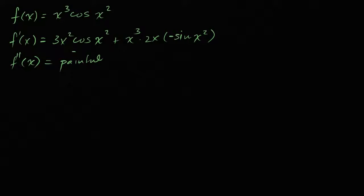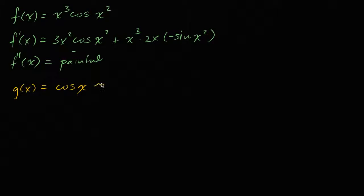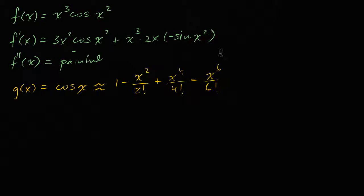I'll give you a hint. We know what the Maclaurin series for cosine of x is — we've done that in a previous video. Look up 'cosine Taylor series at zero' on Khan Academy and you'll find it. This is one of the most famous Maclaurin series. Let's say g of x equals cosine of x. The Maclaurin series approximation of that is: one minus x squared over two factorial, plus x to the fourth over four factorial, minus x to the sixth over six factorial, plus x to the eighth over eight factorial, and it just keeps going minus, plus, on and on.